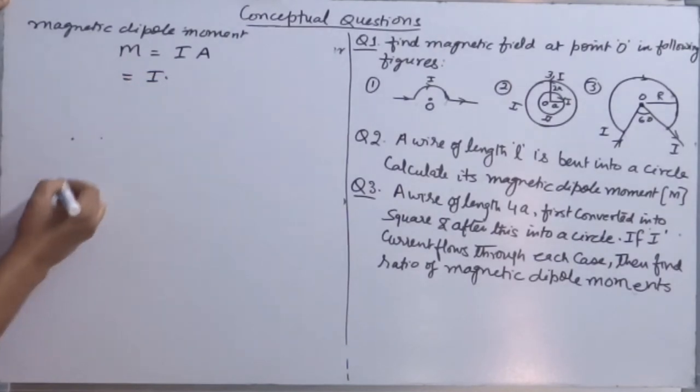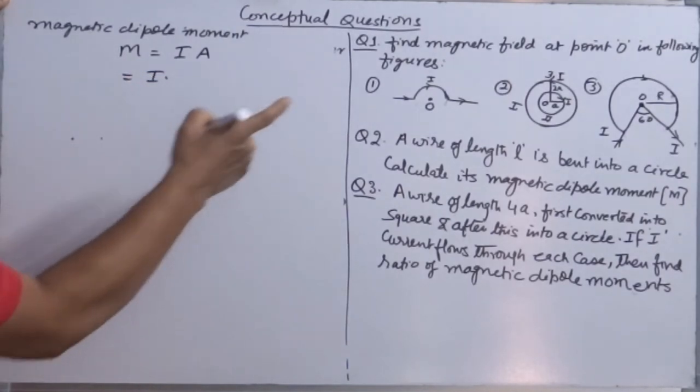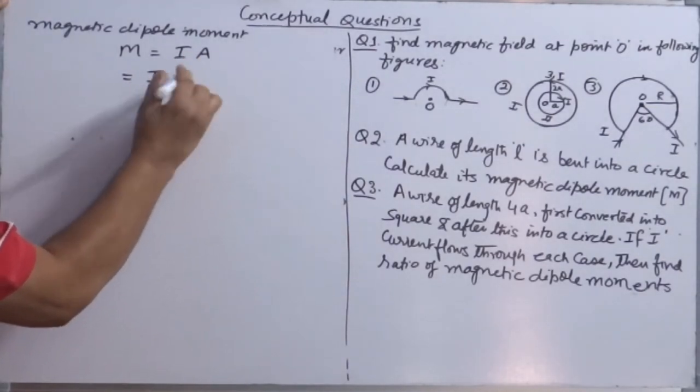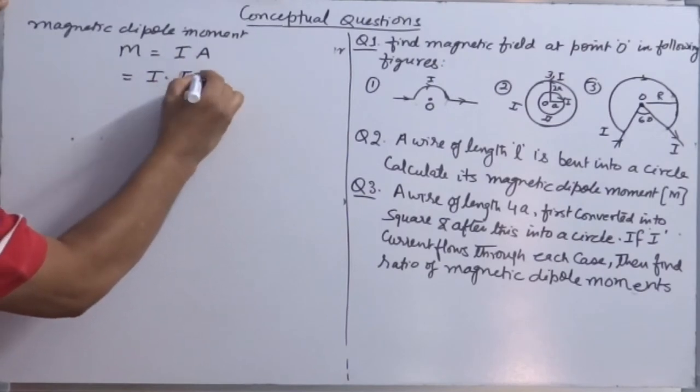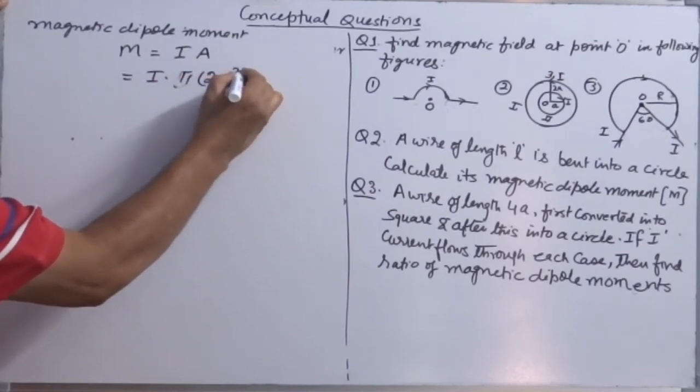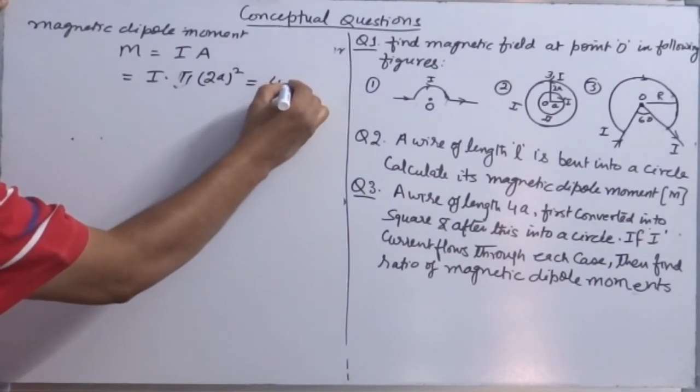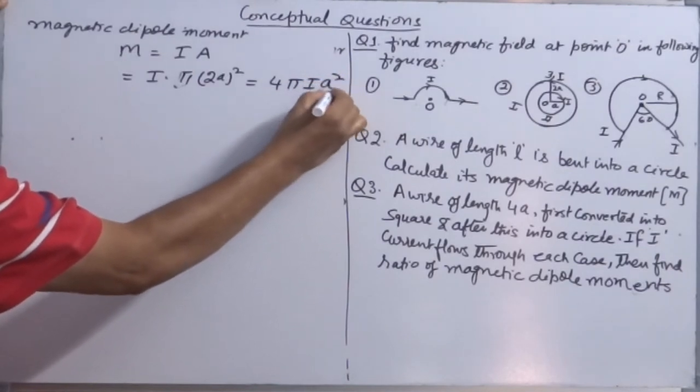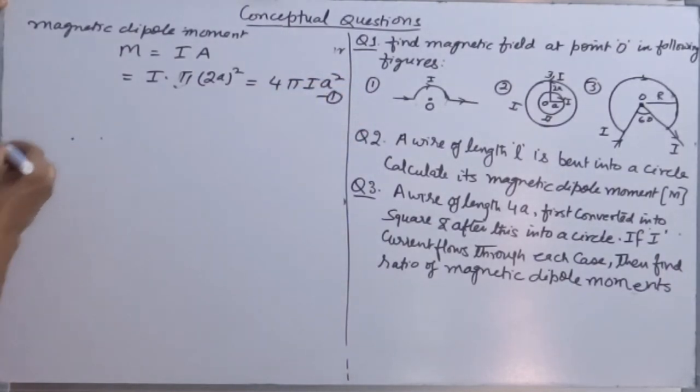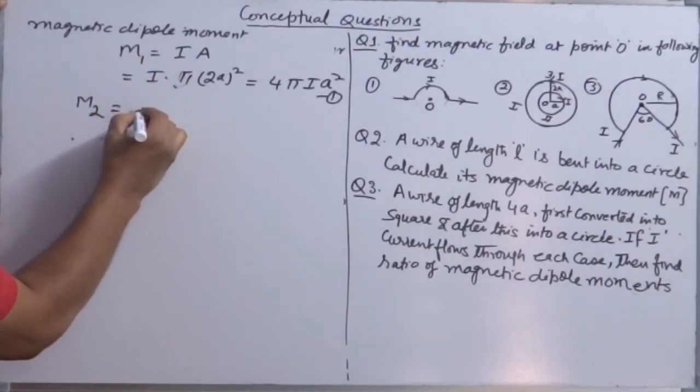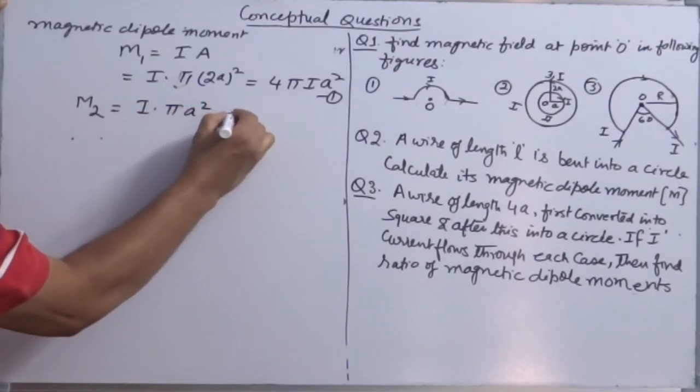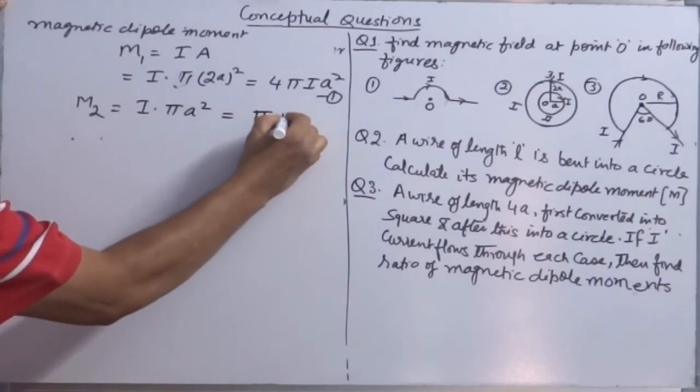What is the area of the first coil? Radius is 2A, so it is I × π(2A)² = 4πIA². Magnetic dipole of the inner coil is IA = π × A² = πIA².